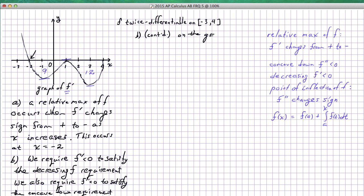On the graph of f prime, f double prime less than 0 corresponds to a negative slope. So these two conditions are met for...